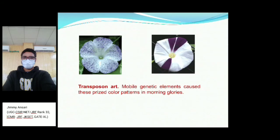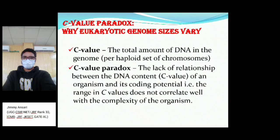An example of what mobile genetic elements can cause is the striped color pattern in morning glory flowers. Two flowers of the same species are shown, but due to transposable elements, their phenotypic characters — specifically their color patterns — have been changed. This illustrates the real-world phenotypic impact of transposable elements.